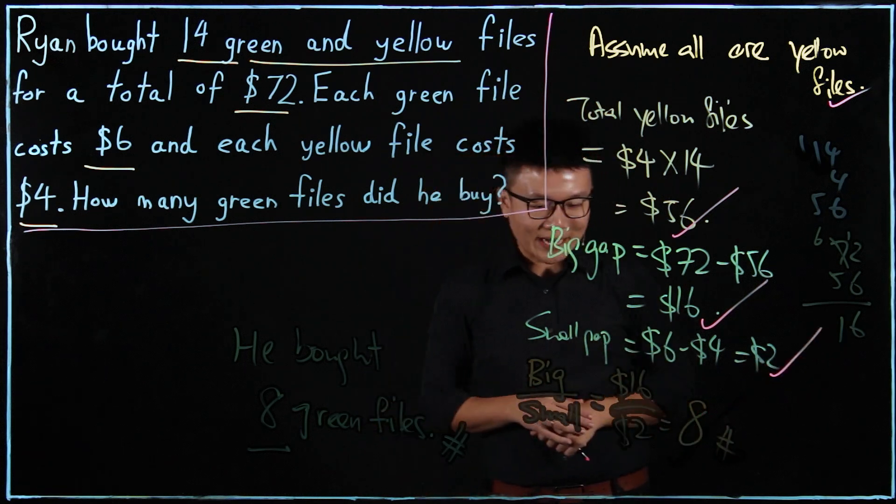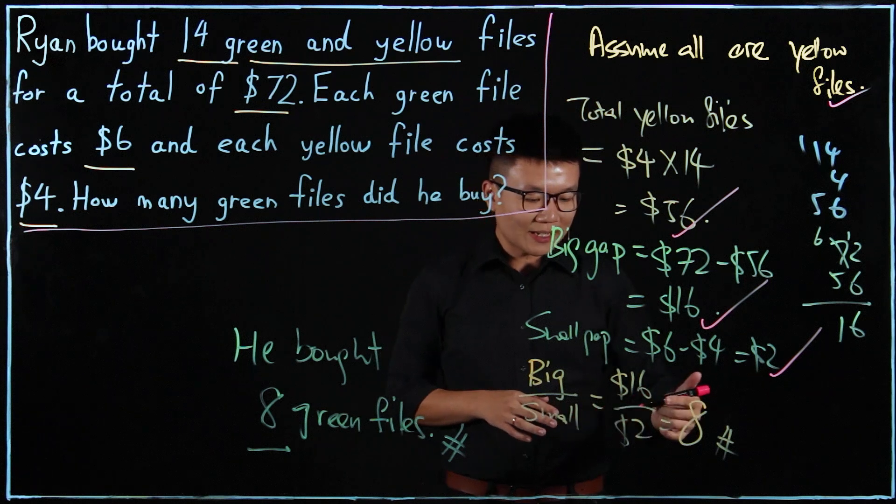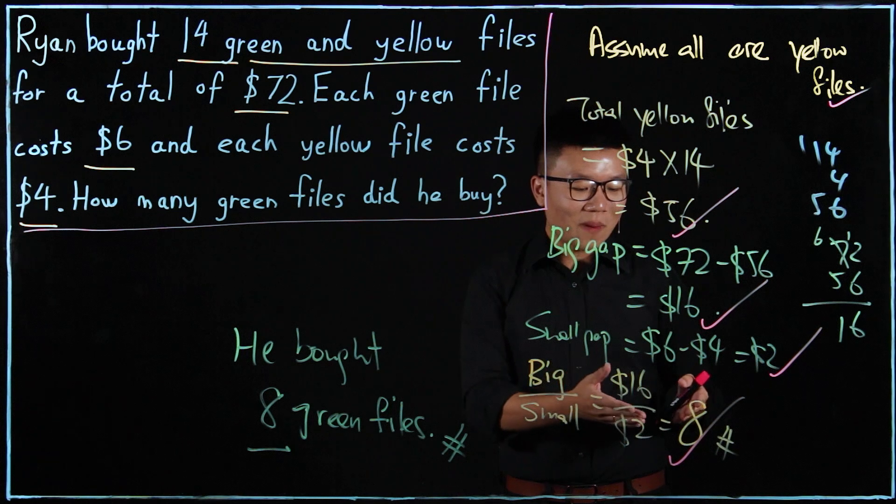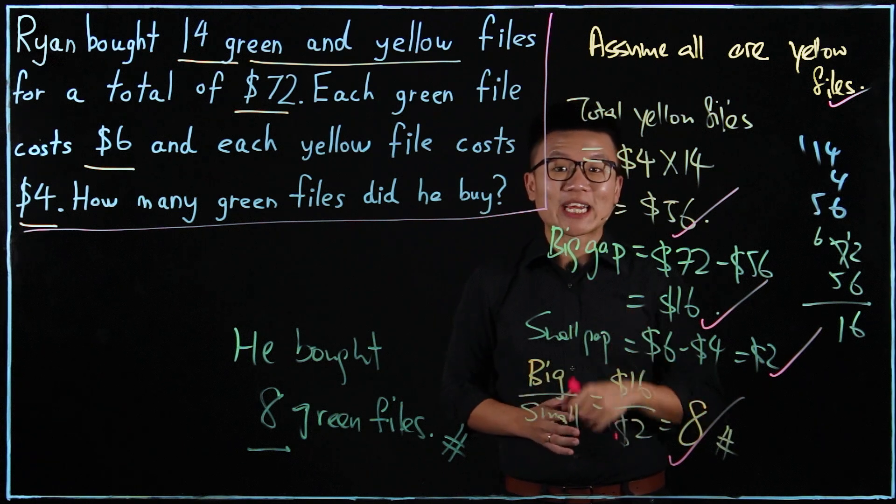And then he used the final step, big over small. 16 divided by 2 is 8. Great. Now, parents, have you always wondered, how do we know this is the right answer? We are going to check it right now.